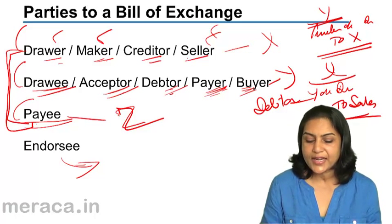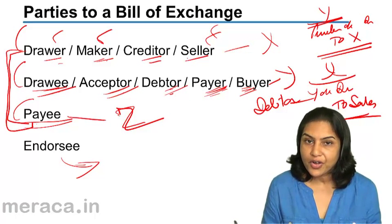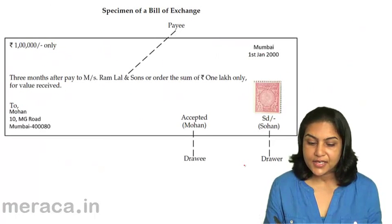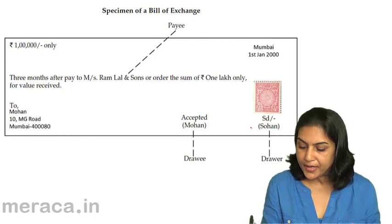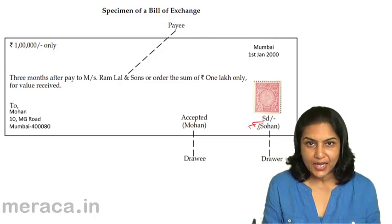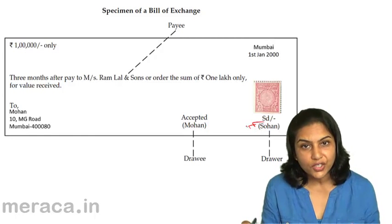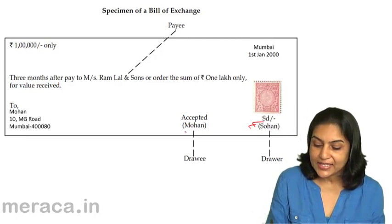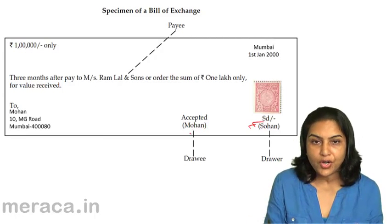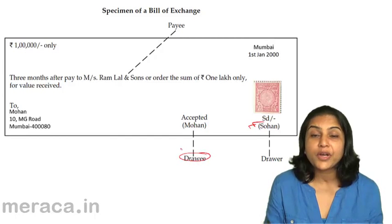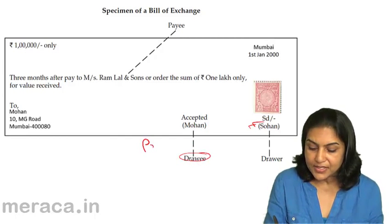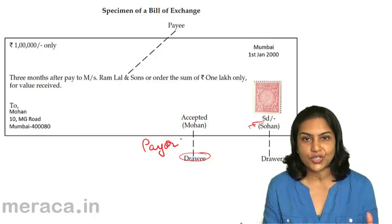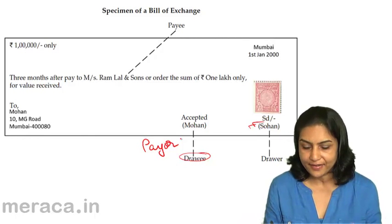Let us look at a specimen of a bill where we have a drawer, a drawee and a payee — three different parties. This is the same format which has been made by Sohan. Sohan is the drawer, the maker. He is the person who sold the goods; he is the creditor. Sohan made the bill. It was accepted by Mohan. Since the bill was drawn on Mohan, Mohan is the drawee. Mohan is the person who will make the payment, so he will also be the payer. He is the person who bought the goods; he is the buyer, the debtor.